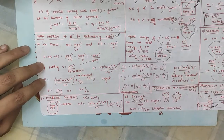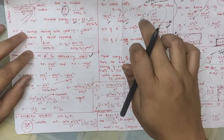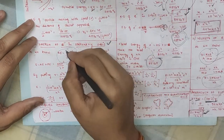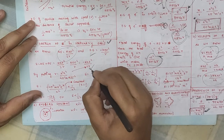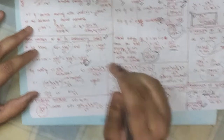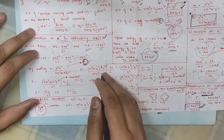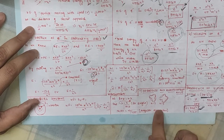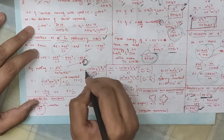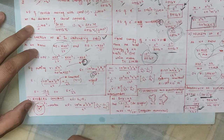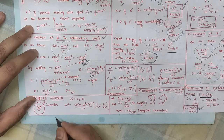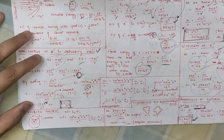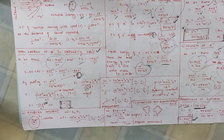Now let's see the total energy of an electron in a stationary orbit. We combine kinetic energy and potential energy. Putting the expression for r into the energy formula, we get a constant times 1/n². The variable here is 1/n². This constant works out to be −13.6 eV, so total energy E = −13.6/n² eV. Energy is inversely proportional to n², and the negative sign confirms the system is stable and bound.